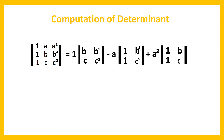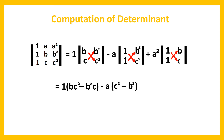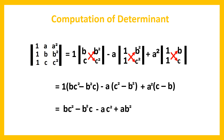Expanding: 1 × (bc² − b²c) minus a × (c² − b²) plus a² × (c − b). This gives bc² − b²c + ab² − ac² + a²c − a²b. That is the determinant value of the given matrix.